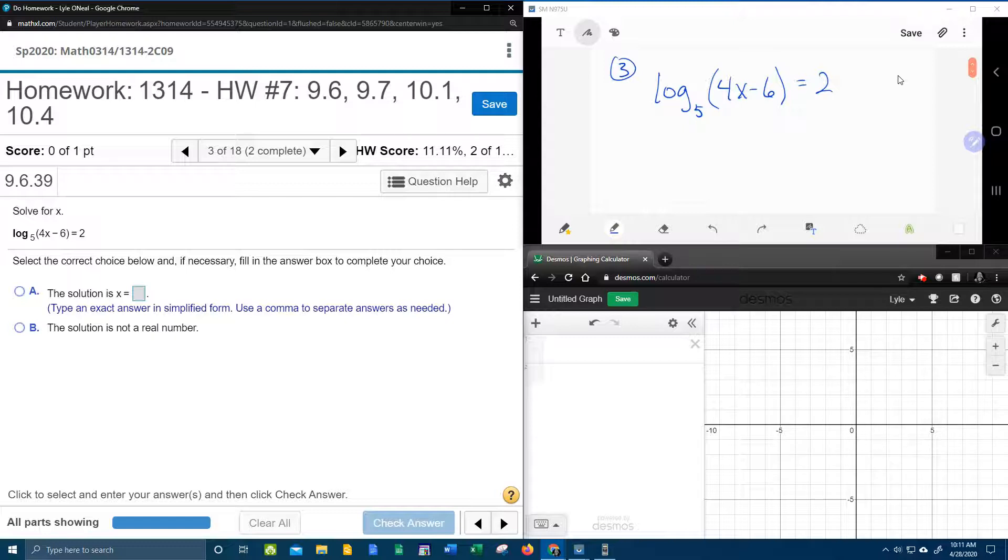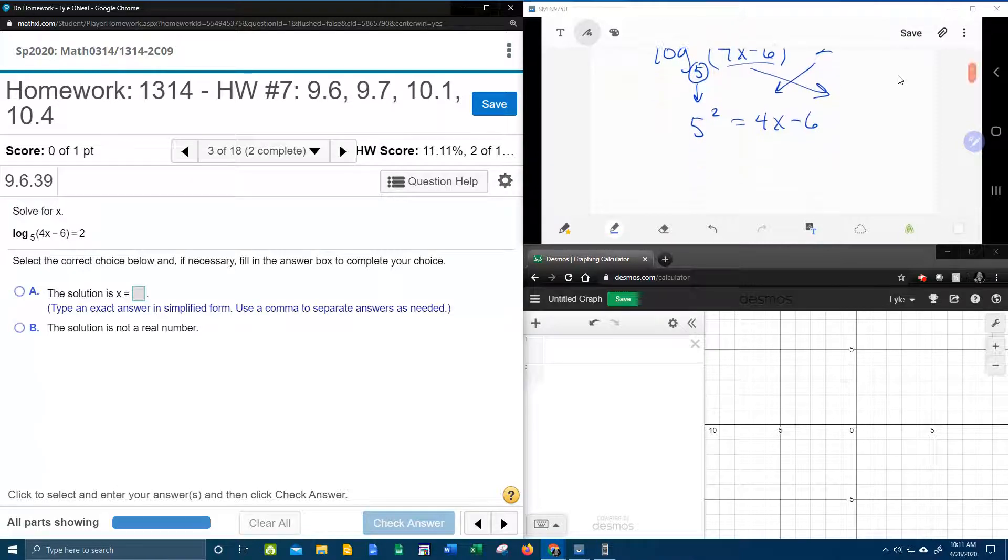And at that point, I'm going to convert to an exponential. We're going to bring the base down, switch the other two around. So since the 5 is a base, he's going to need a power, and that's where the 2 comes in. Bring the base down, switch the other two around, and the 4x minus 6 goes here. So now we have an exponential equation, and now we can solve for x.